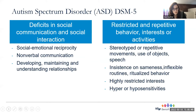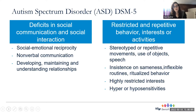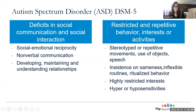Autism spectrum disorder, or ASD, is a neurodevelopmental disorder with symptoms that fall in two main domains. The first domain involves deficits in social communication and social interaction — difficulty with social emotional reciprocity or back-and-forth communication, nonverbal communication such as eye contact or body language, and developing and maintaining relationships. The second domain is restrictive and repetitive behaviors, often referred to as RRBs. This category includes stereotyped or repetitive movements, or what we often call stimming behaviors, like hand flapping, rocking, and pacing. Also repetitive use of objects or speech, like lining up toys or repeating certain phrases.